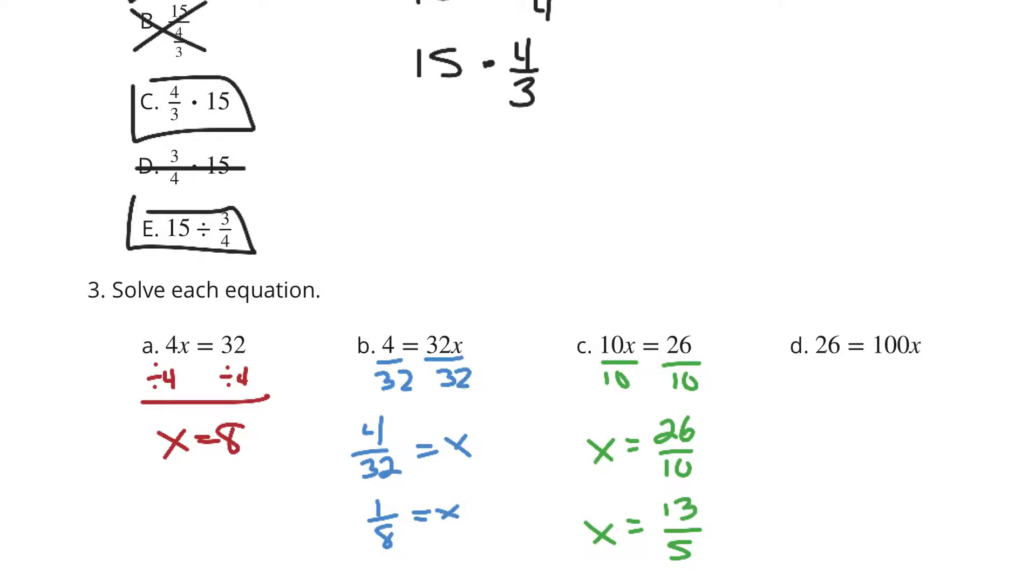As we move on to D, 26 equals 100 times x. Divide by 100 on both sides. And 26 over 100 is going to equal x. Again, simplify by dividing by 2 on top and bottom. And you'll get 13/50 equals x.